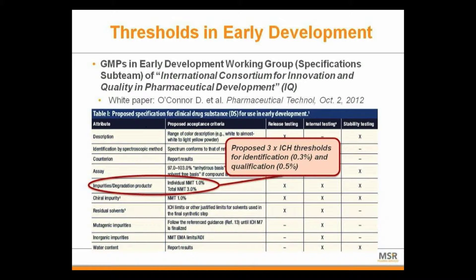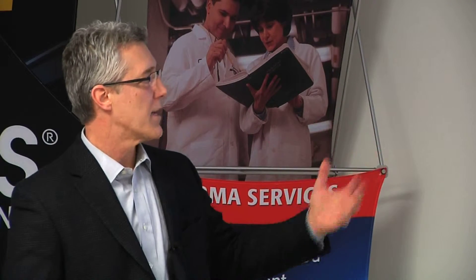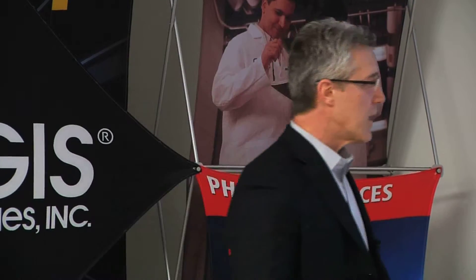Again, these may seem liberal, but early on they're probably not that liberal. I've seen 1% as well early on. But this is probably going to be the new norm as this information gets disseminated and discussed, and probably at some point a guidance would be the next step. It is a group trying to deal with early development issues, and they're really applying this right now only to phase one and phase two-a clinical programs.